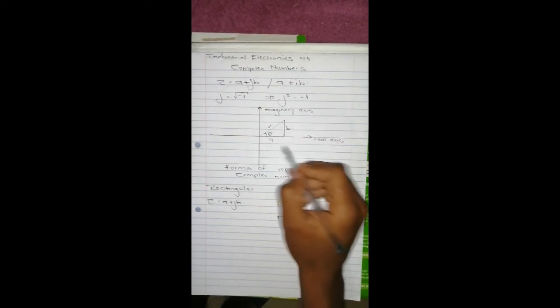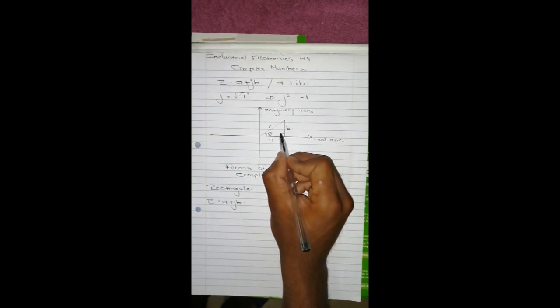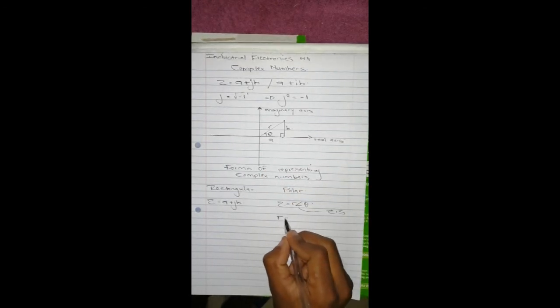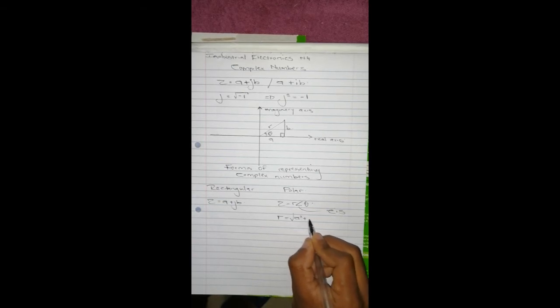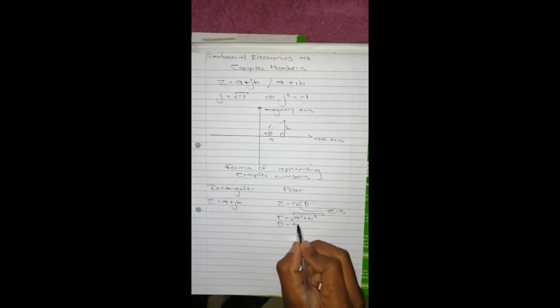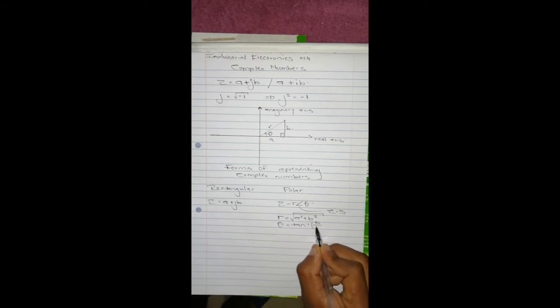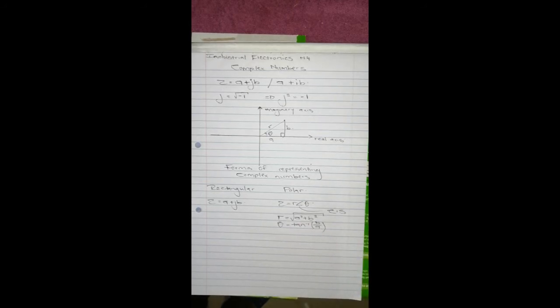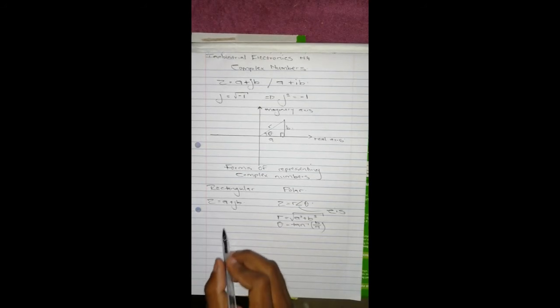So to get this 'r', this is a triangle which is a right angle here, we use Pythagorean theorem and it comes a squared plus b squared all under square root. And theta is given as tan inverse, opposite which is 'b' over 'a' which is the adjacent, and sorry for that.